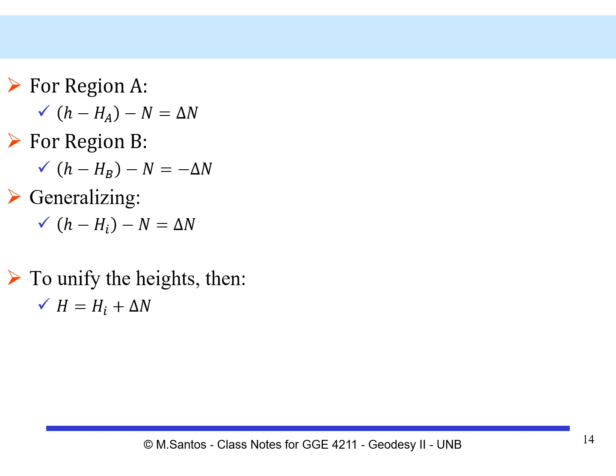The quantity delta N is a very interesting quantity because it comes from the contribution of two terms, essentially. One term we can refer to as the global offset, related to the difference between the W zeros — that would be the difference between the W0 adopted for the computation of the regional geoid and the W0 adopted for the computation of the global geoid.